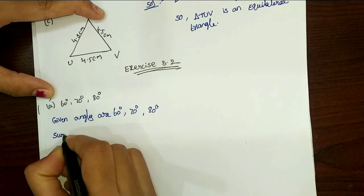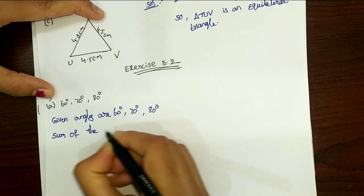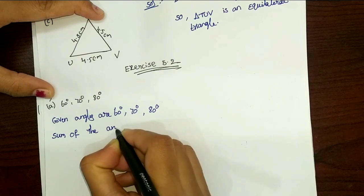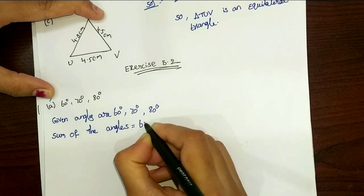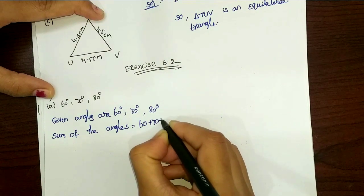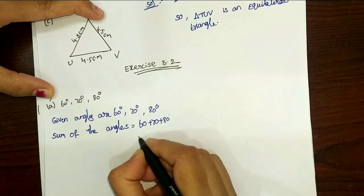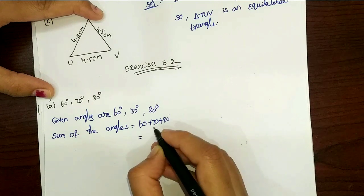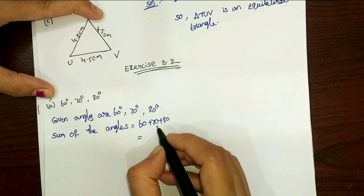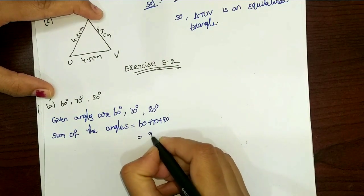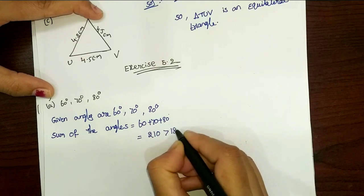We add the angles. Sum of the angles is equal to 60 plus 70 plus 80. So 60 plus 70 is 130, and 130 plus 80 is 210. So this is greater than 180.